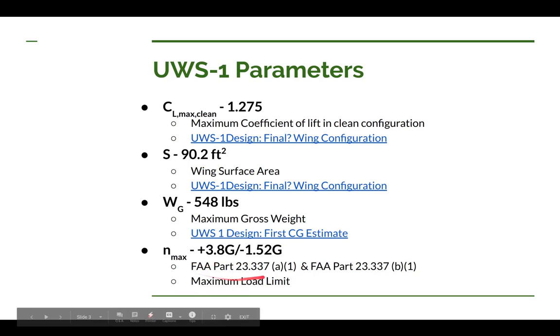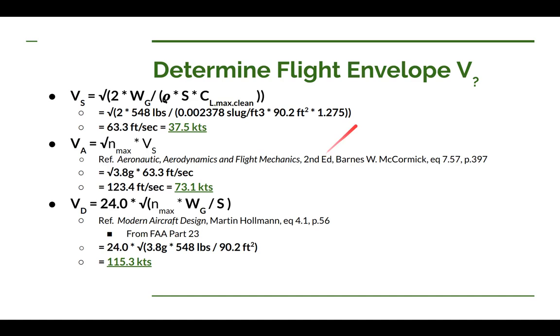These are based on FAA regulations Part 23.337, section A1 which is the positive G limit and section B1 which is the negative limit. Now that we specified some of these parameters, we can actually calculate our V values. We needed these values in order to do it.